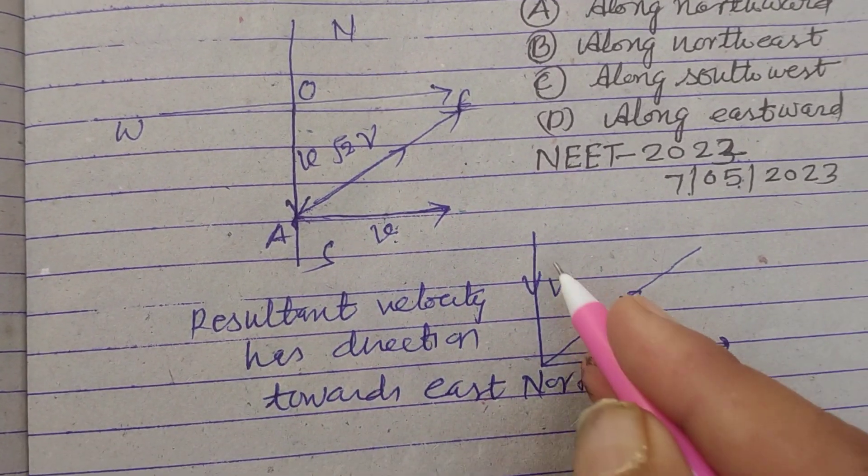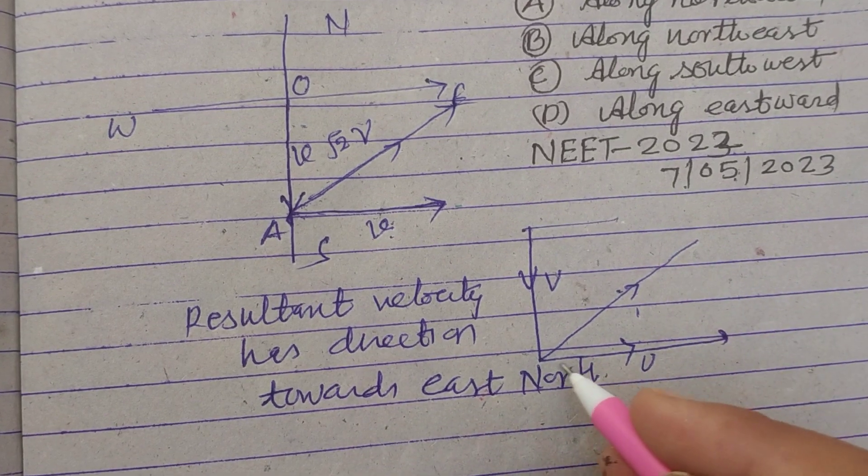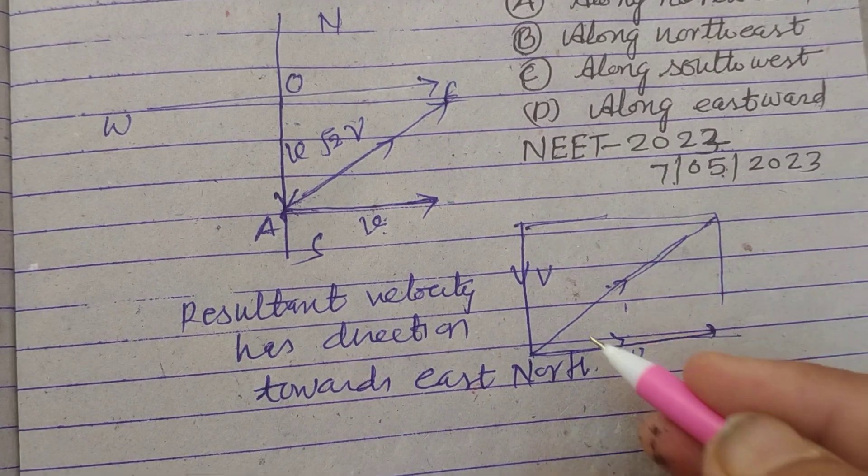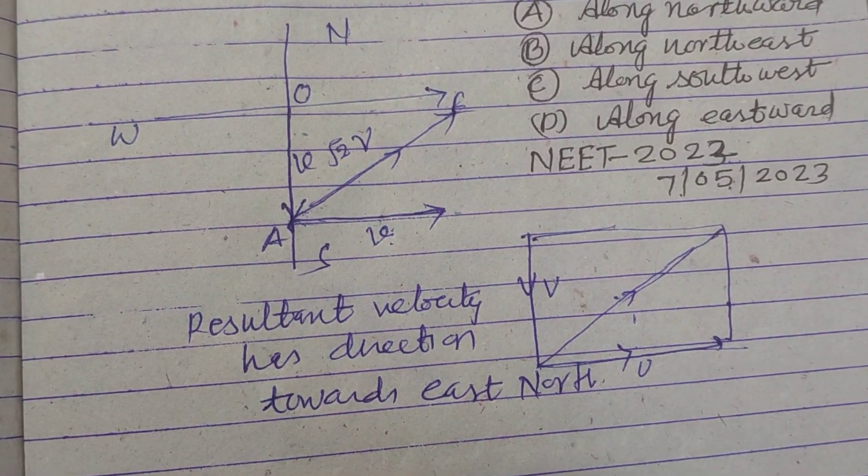Because you know that when two vectors are acting at angles, their resultant is given by the diagonal of the parallelogram.